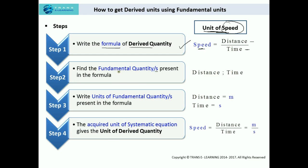Second step: find the fundamental quantity or quantities present in the formula. So here in this case we have two fundamental quantities. The distance is a fundamental quantity and the time is a fundamental quantity. Now the third step: write the units of the fundamental quantity or quantities present in the formula.